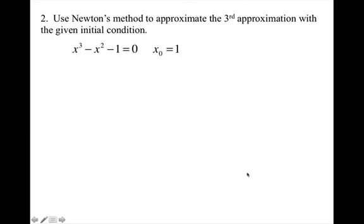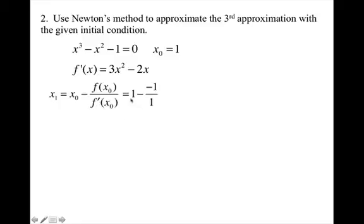Let's use Newton's method to approximate the third approximation with the given initial condition. So first thing is I want to find the derivative. I want to find x₁, which means x₀ - f(x₀)/f'(x₀). So when I do this, x₀ is one. When I plug in one to the derivative, I get one. When I plug in one into my original function, I get negative one. So that means my x₁ is two.